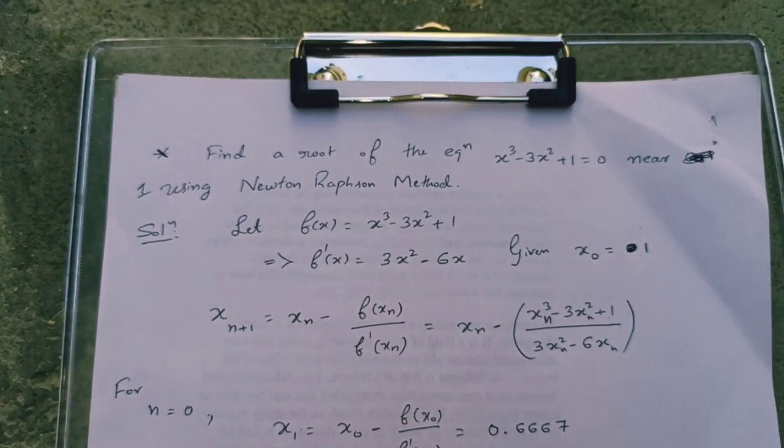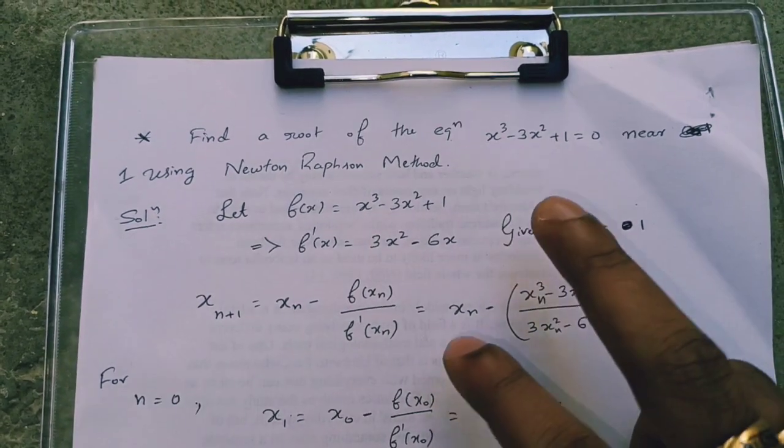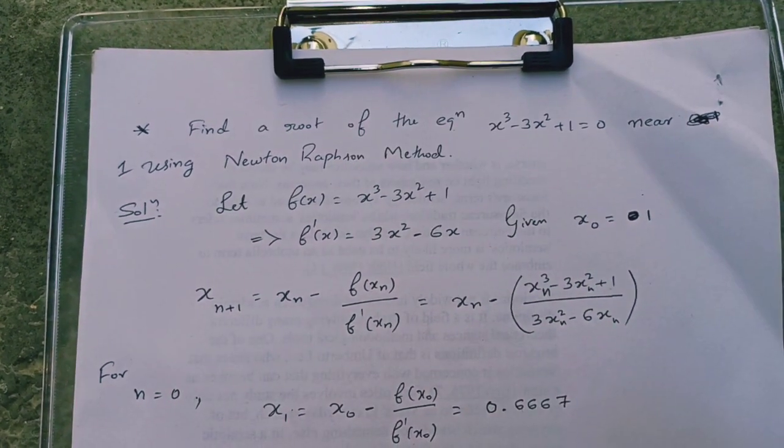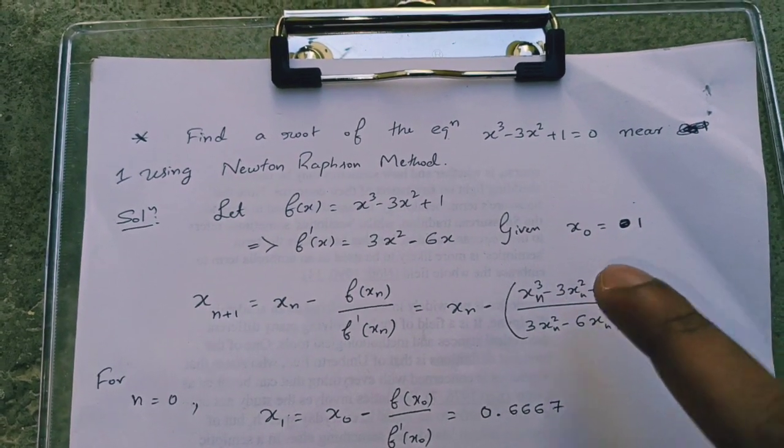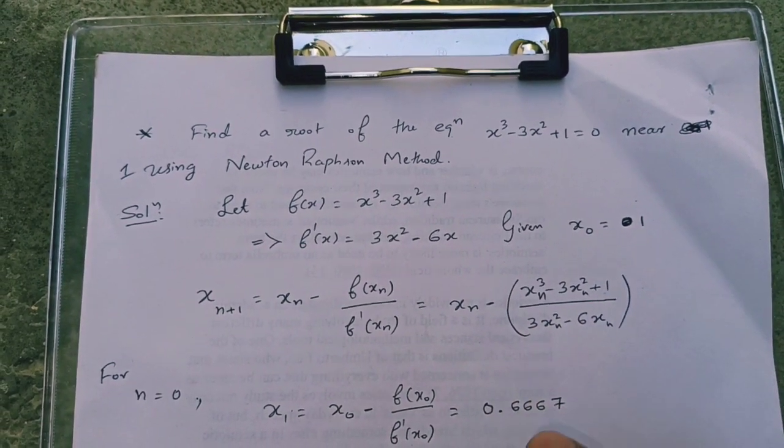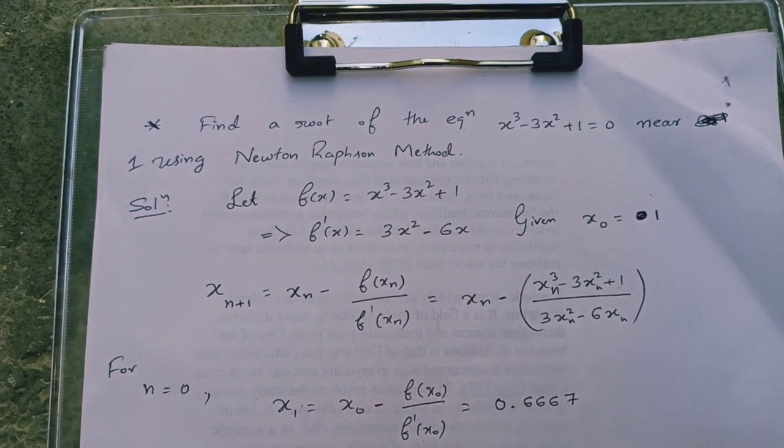Consider the problem. Find the root of the equation x cube minus 3x square plus 1 equal to 0 near 1 using Newton-Raphson method.